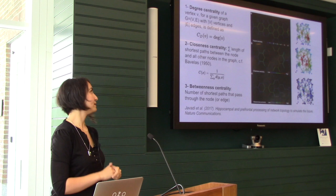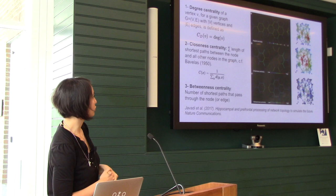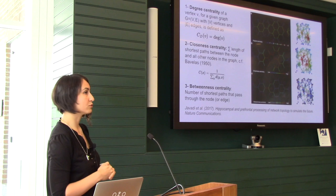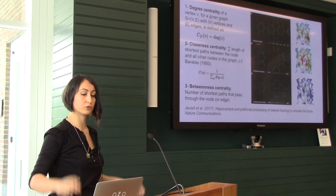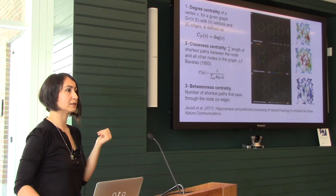Closeness centrality is basically averaging the number of shortest paths between nodes — it's not a bad measure of how close two things are to each other. The shortest path links would be way further if they are far, so it's very intuitive. And you have betweenness centrality, which is the number of shortest paths that pass through a particular node or edge. This is very useful for clustering networks, as we will see in a couple of slides.